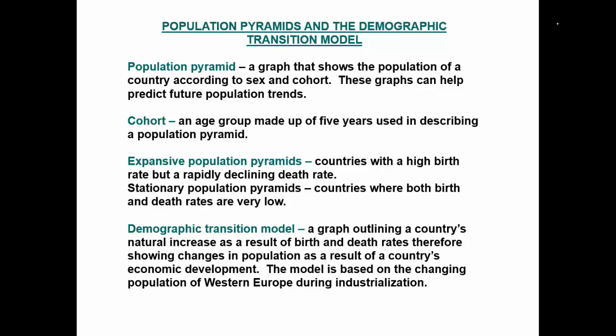The demographic transition model is a graph outlining a country's natural increase as a result of birth and death rates, showing changes in population as a result of a country's economic development. The model is based on the changing population of Western Europe during industrialization, giving us an overview of how the Industrial Revolution changed what a population looked like across different phases of our modern era.